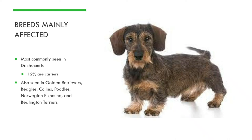The breeds mainly affected: dachshunds are the most commonly seen, with roughly 12% of dachshunds being carriers — which is why genetic testing is recommended before breeding, to avoid pairing two carriers and producing affected puppies. It is also seen in golden retrievers, beagles, collies, poodles, Norwegian elkhounds, and Bedlington terriers. Beagles appear to have a similar but slightly different connected gene that is dominant. There is not a lot of research done on this in dogs — most research exists in humans — and studies in dogs are just now beginning.